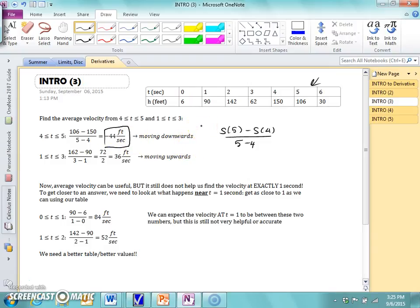So again, let's use that same formula, s of b minus s of a all over b minus a here from 1 to 3 seconds. I did s of 3 minus s of 1 all over 3 minus 1. From 1 to 3 seconds, the average velocity is 36 feet per second.